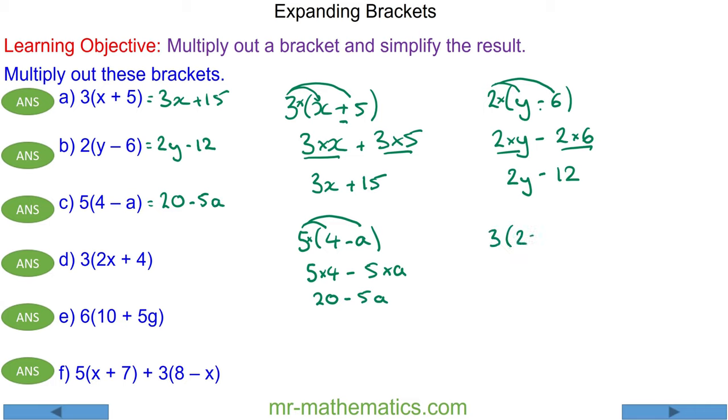For question D we've got 3 multiplied by 2x plus 4, with 2x plus 4 in brackets. So 3 times 2x plus 4. 3 times 2 is 6, so that becomes 6x, and 3 times 4 is 12. So the expansion is 6x plus 12.